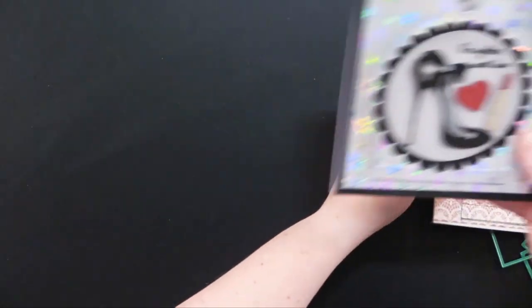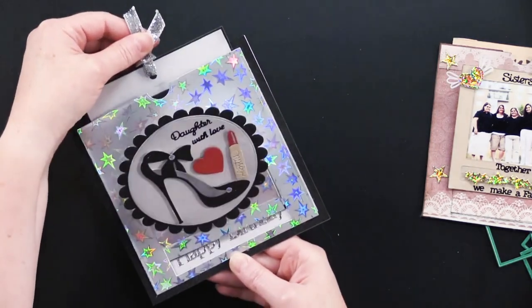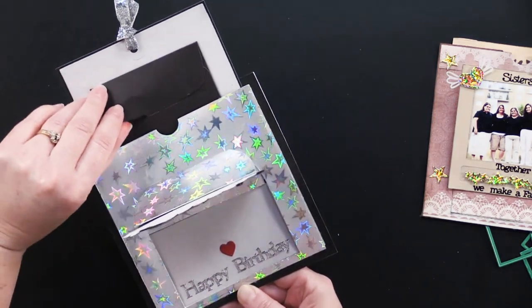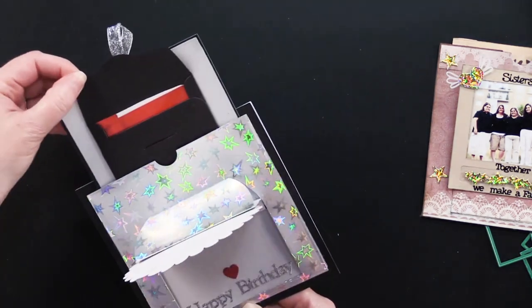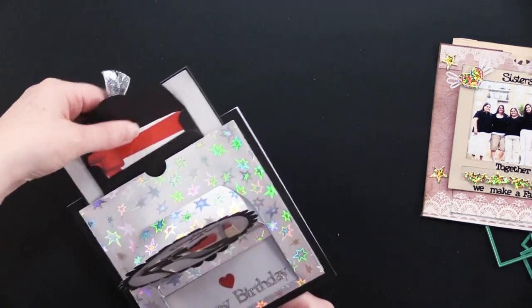Here is the circle one. This one has a little pull on it. Pull that up. Happy birthday. And then she put this cute little secret pocket in here which is perfect for a cute little gift card. Isn't that great? I love that idea.